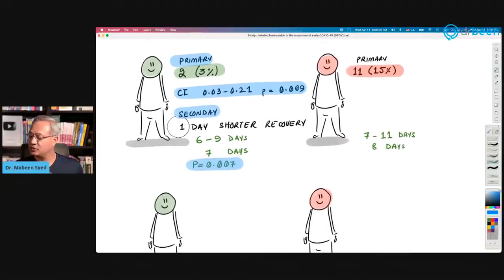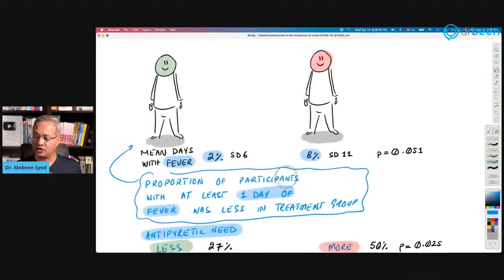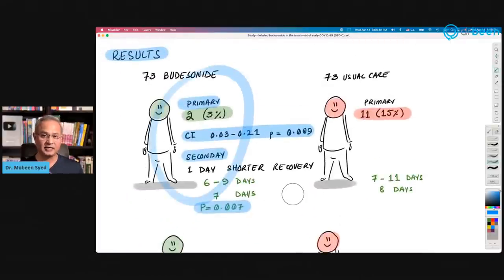Secondary endpoint. So the recovery was one day shorter. Six to nine days in the treatment group, budesonide group, seven to 11 days in the control group or usual care group, eight days average here, seven days average here, 0.007. That probably is not too big of a change. But this change that ending up in the urgent care or hospital is a big change. We also know that those who end up in the hospital, out of them, there are three to four per hundred who would end up in ICU. And then from there, there are deaths as well. So if there is a drug that prevents someone from ending up in a hospital, it is essentially protecting them from moving towards death as well from COVID.